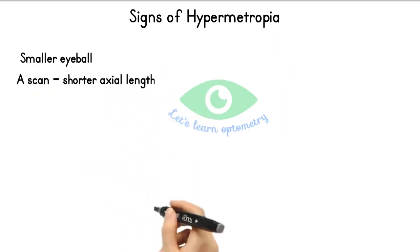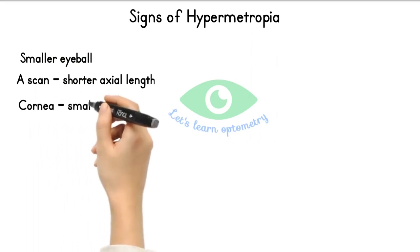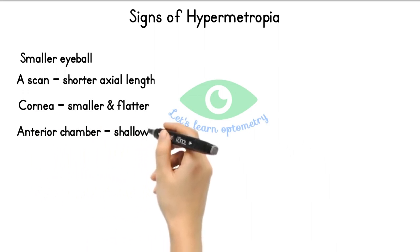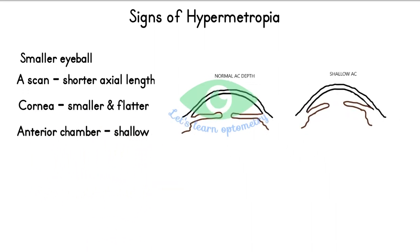Eye scan reveals shorter axial length. Cornea may be slightly smaller or flatter as in cornea plana. Anterior chamber is shallow. Voluntary exertion of accommodation with convergence dissociates the muscle balance and produces convergent squint in children.